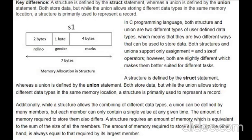When a structure definition has members like roll number, gender, and marks, all three members are allocated at different memory locations, and the total memory allocation is 7 bytes. You can write a simple program for this — put a structure definition, use the sizeof operator, and check the output.